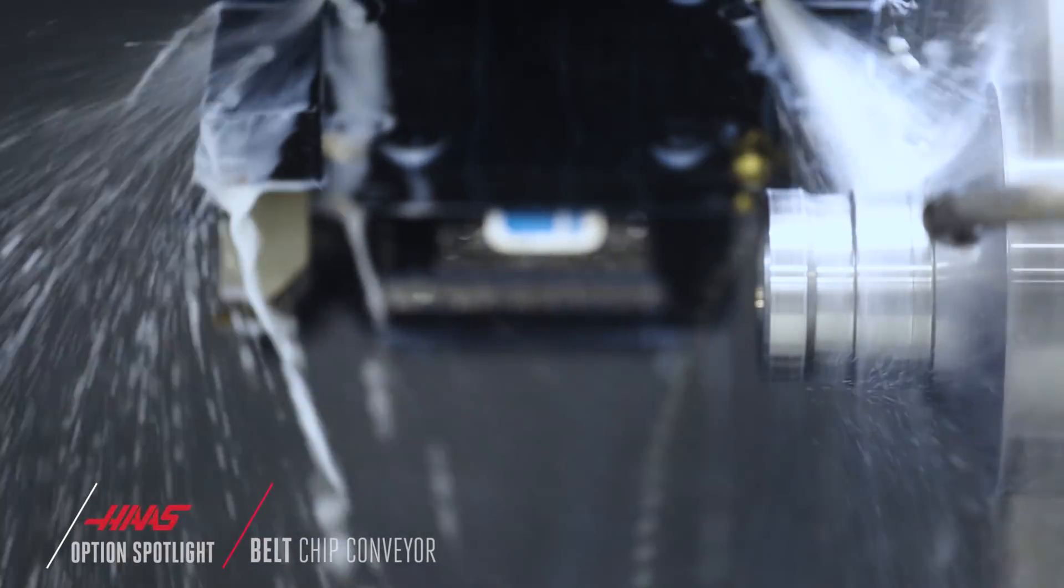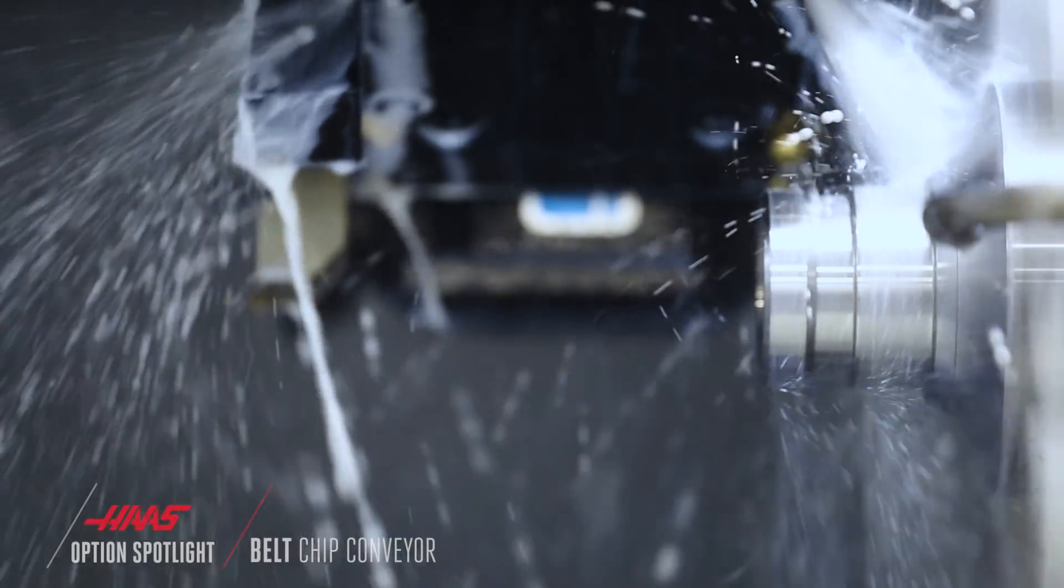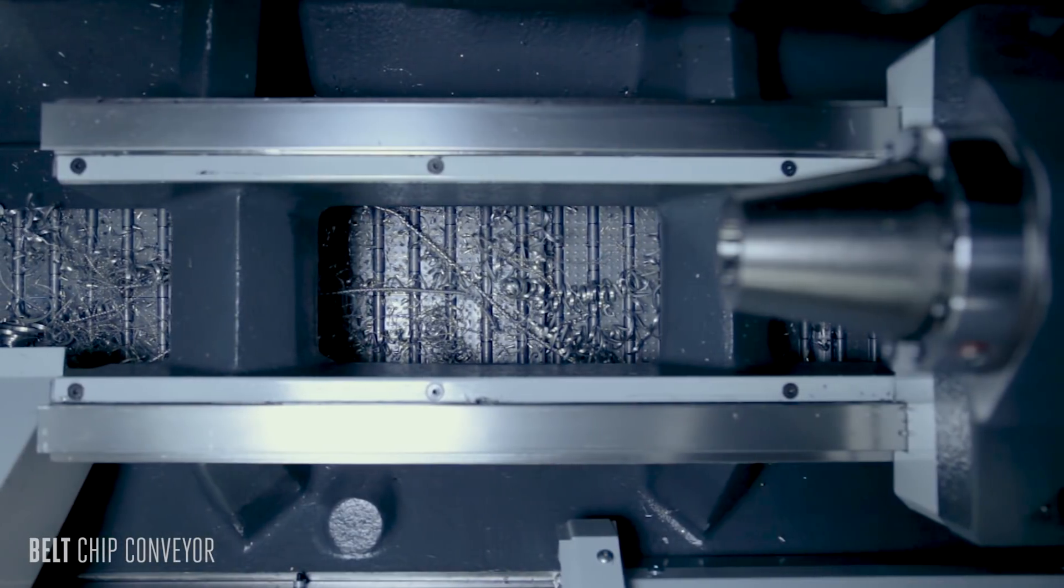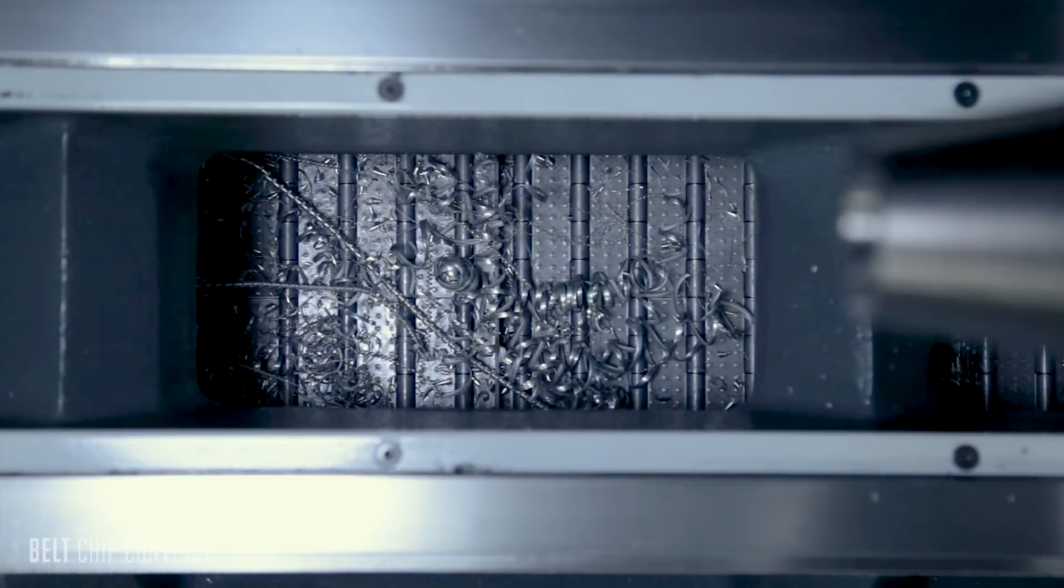If you'd rather spend your time making chips instead of dredging them out of the bottom of your machine, the belt chip conveyor is an essential option.